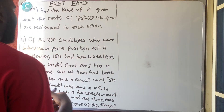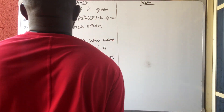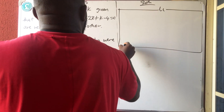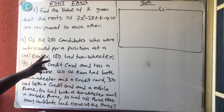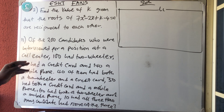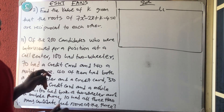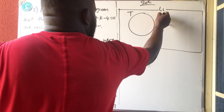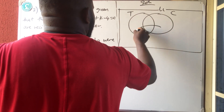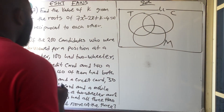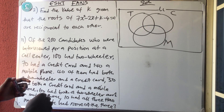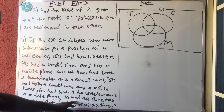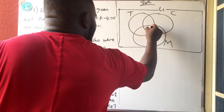Now, in number 11, I made a mistake. So let us resolve it. They said that of 200 candidates who were interviewed for a position at a call center, 100 had a two-wheeler. Let me draw a circle for two-wheeler. 70 had a credit card, and there's also a mobile phone circle. They said 10 had all three, so inside the center you write 10.